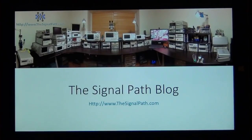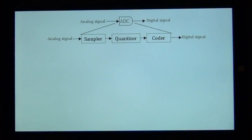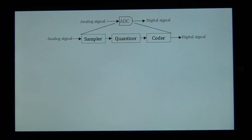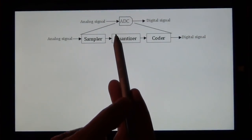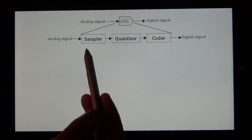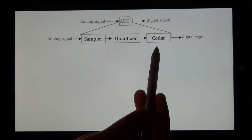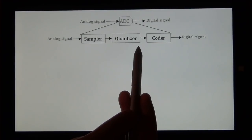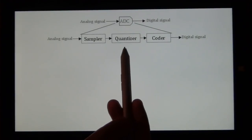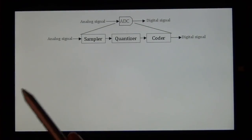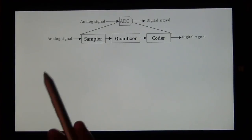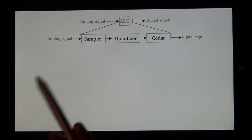I apologize for having to film my tablet here, but my screen capture software isn't working. So let's start very, very basic. We have a very basic analog to digital converter. Inside an analog to digital converter, there is nothing more than a sampler, a quantizer, and a coder. The coder is essentially a digital block responsible for collecting the data from the quantizer. The most important components are the sampler and the quantizer. The sampler is what determines the output data rate.